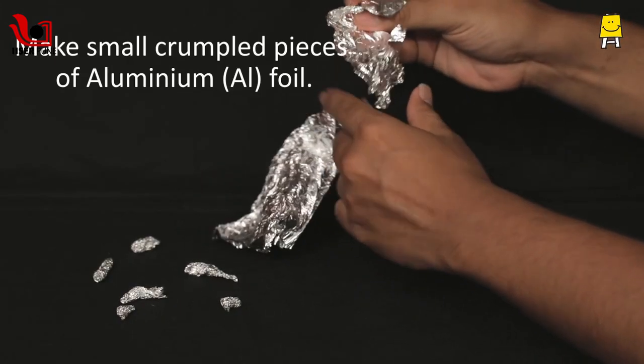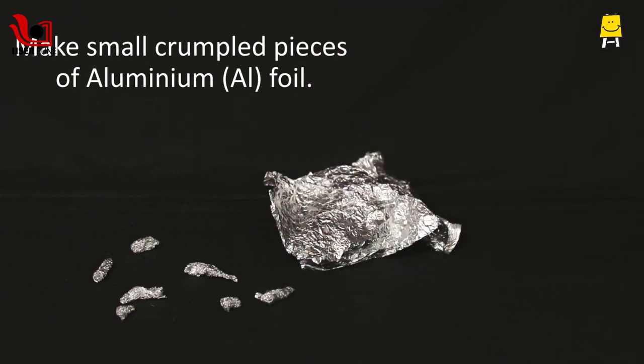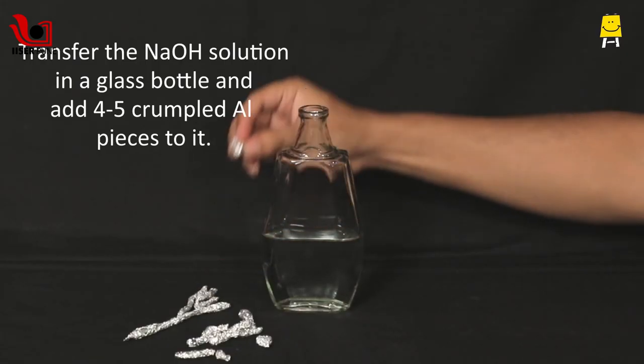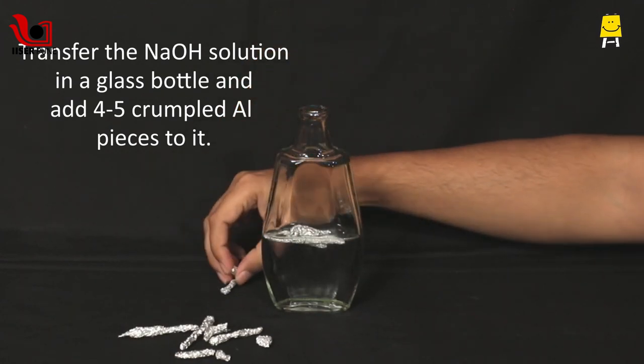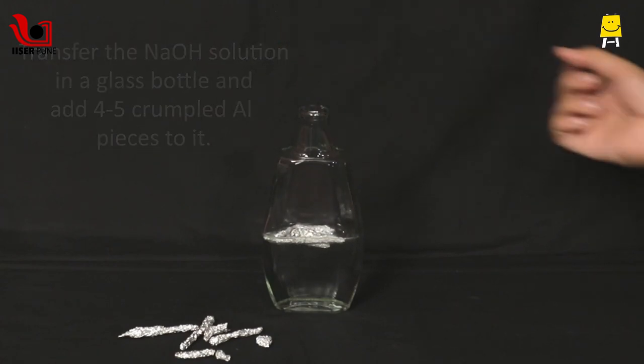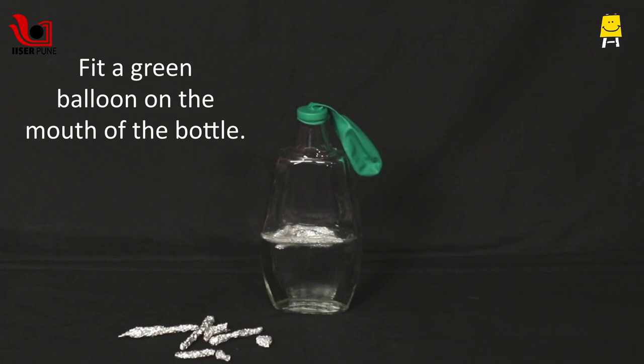Make small crumpled pieces of aluminium. Transfer the NaOH solution in a glass bottle and add four to five crumpled aluminium pieces to it. Fit a green balloon on the mouth of the bottle. The gas will get collected in the balloon.